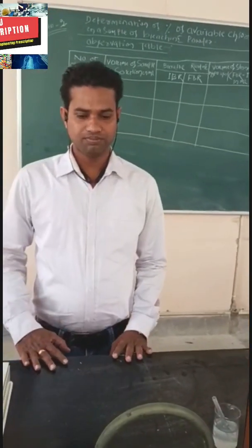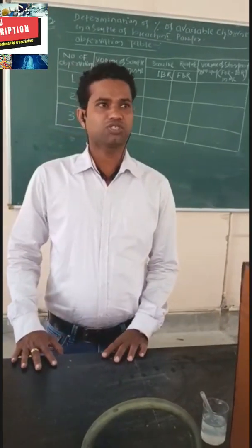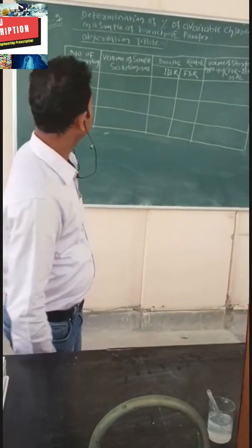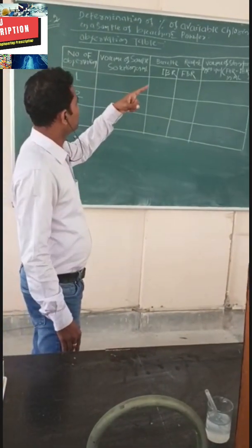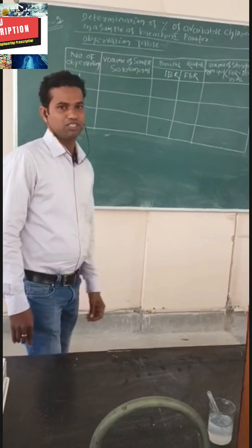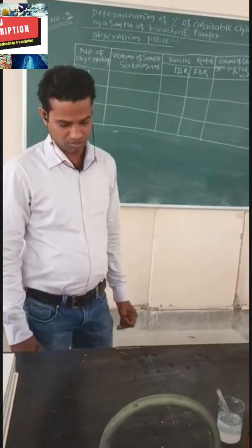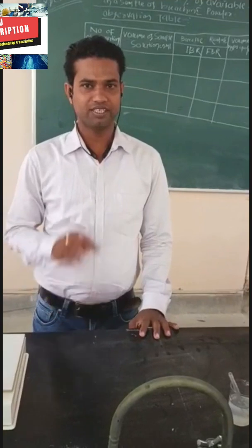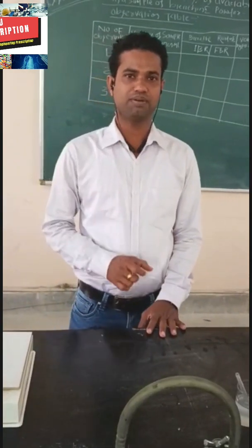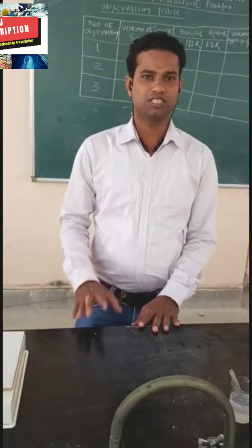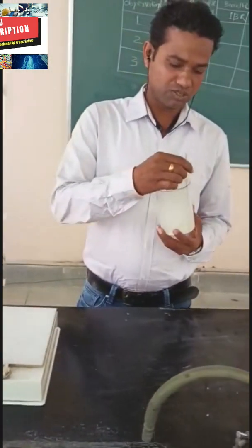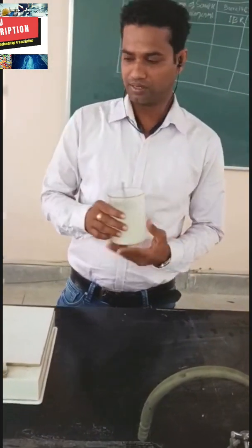Good morning. This is your second experiment. Today you will perform the percentage of available chlorine in a sample of bleaching powder solution. First, we prepare bleaching powder solution by taking three grams of bleaching powder and 250 ml of distilled water. This is the bleaching powder solution — it is already prepared.